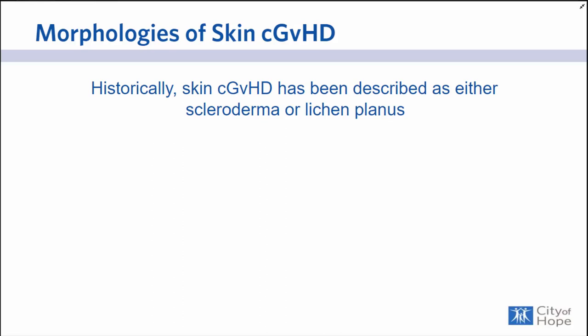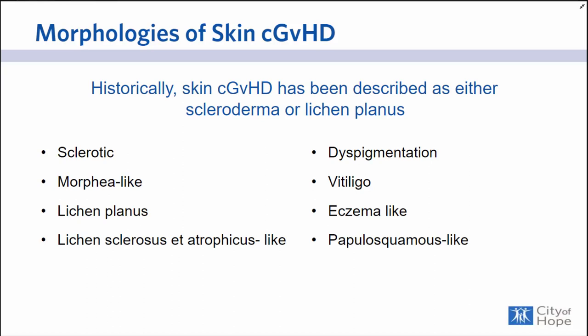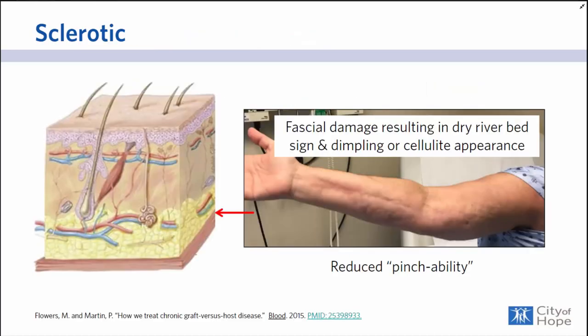Historically, the morphologies of chronic skin GVHD were described as either scleroderma or lichen planus. As we've learned more, we recognize there are many more morphologies that can occur in the skin. These include sclerotic and morphea-like, lichen planus and lichen sclerosis-like, pigmentary changes, and eczema and papulosquamous-like graft-versus-host disease. I'm going to start at the bottom of the skin anatomically and work upward, because inflammation and damage in the deeper parts of the skin tends to lead to more severe GVHD.